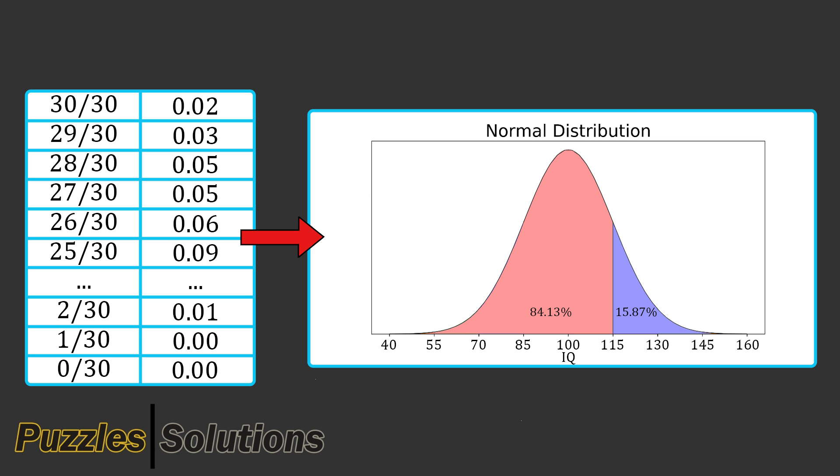If we move this line to 115 IQ, we have 84.13% of people below 115 IQ and 15.87% of people above 115 IQ. If we move the line to 131 IQ, we will have 98% of the population below and 2% of the population above. Now I want you to look at the raw data. The top 2% of the sample scored 30 out of 30, so we assume that the top 2% of the population will score 30 out of 30.